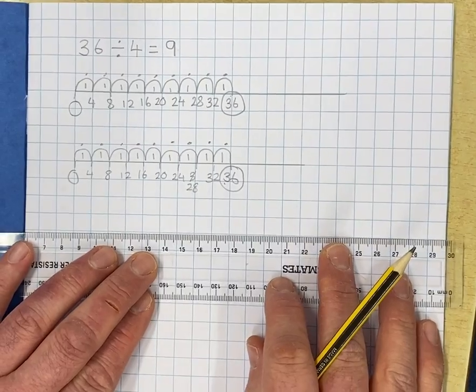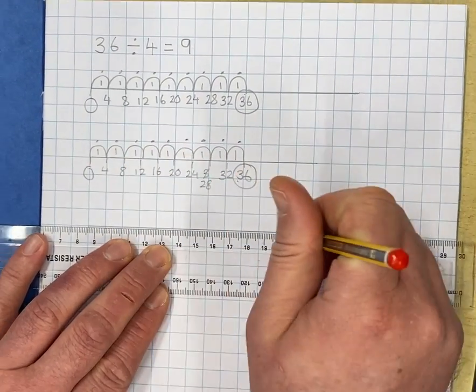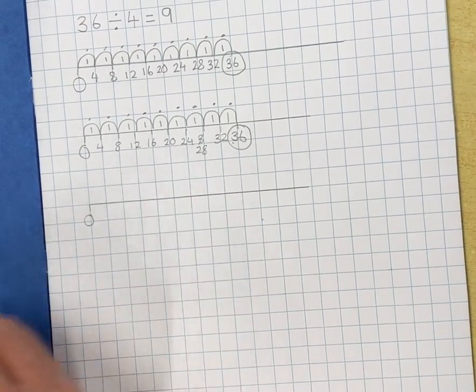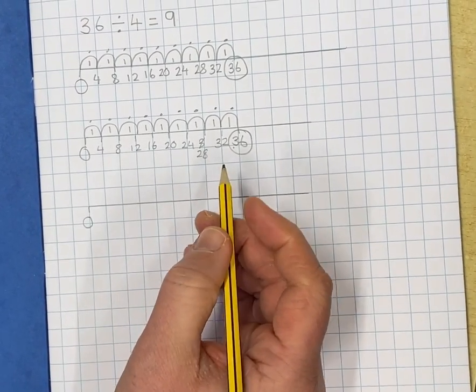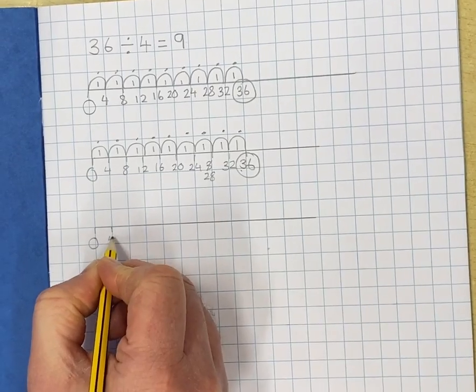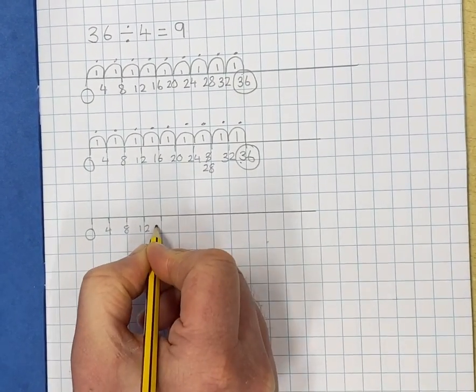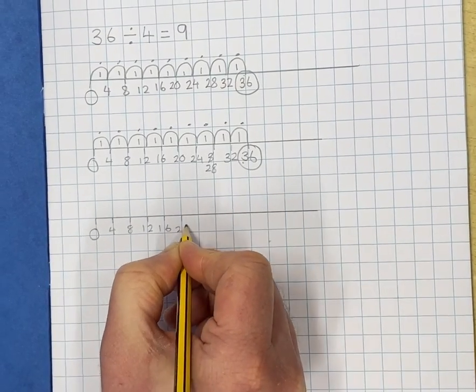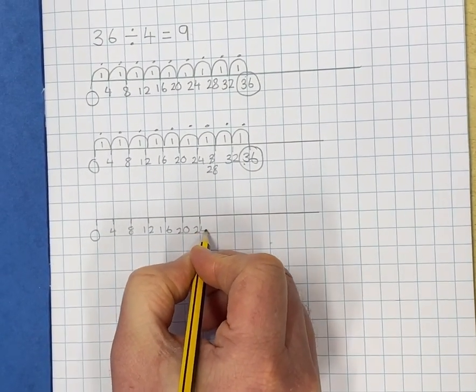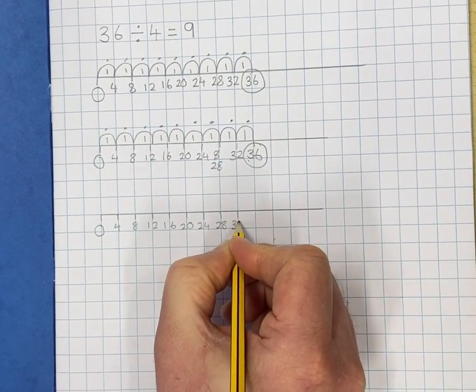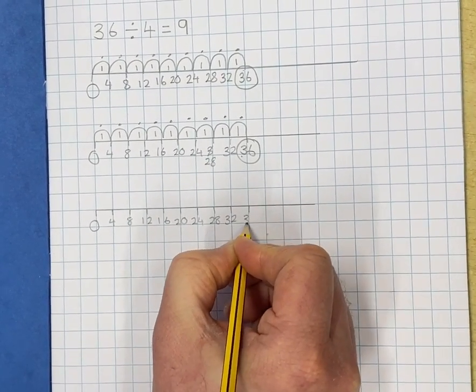Right. The final way. Draw the number line. Label zero. This time we're going to put the numbers in first. Okay. So 4, 8, 12, 16, 20, 24, 28, 32, 36.